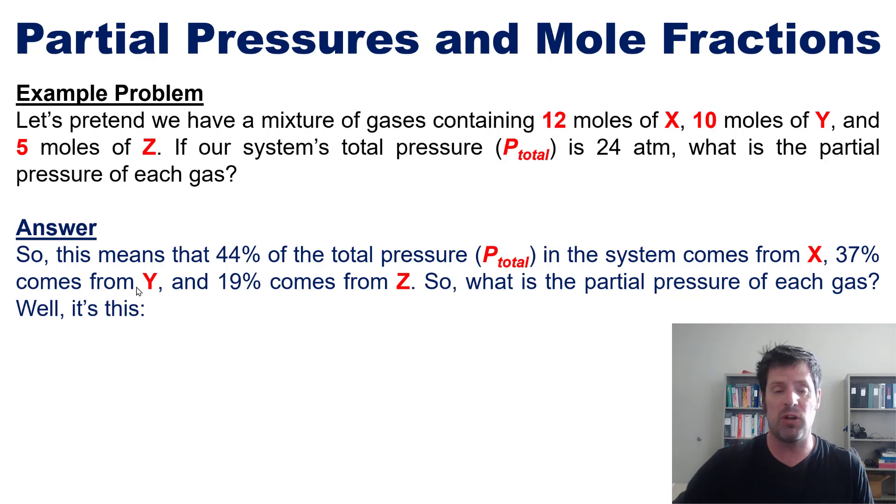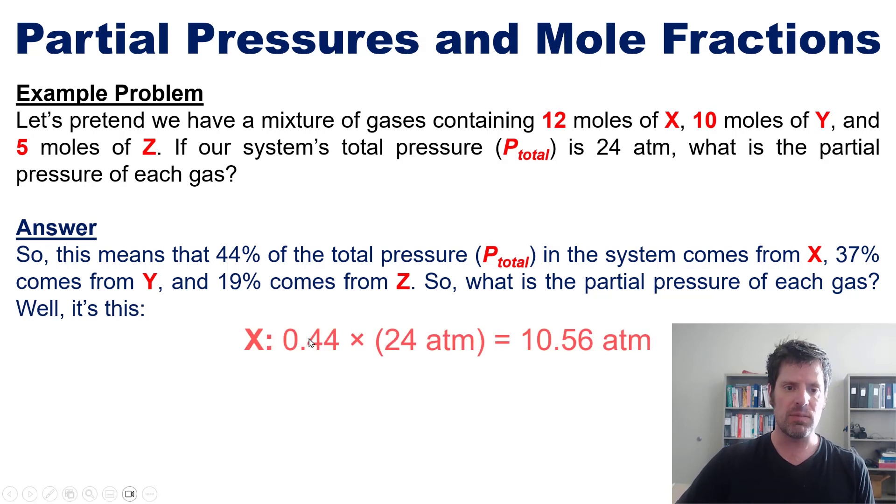So what is the partial pressure of each of these gases? Well because the original problem told us that the total pressure in the entire system is 24 atmospheres, all we have to do to figure out X's pressure for example is just multiply 24 atmospheres by 0.44.